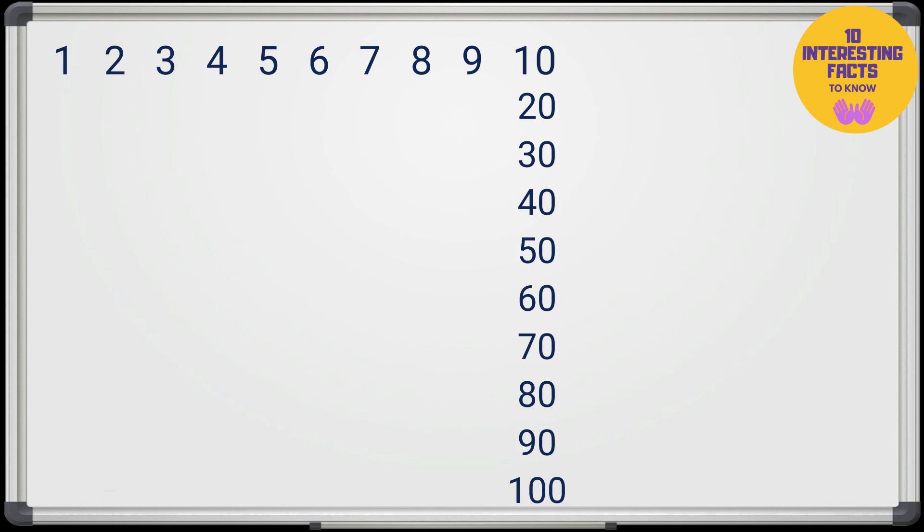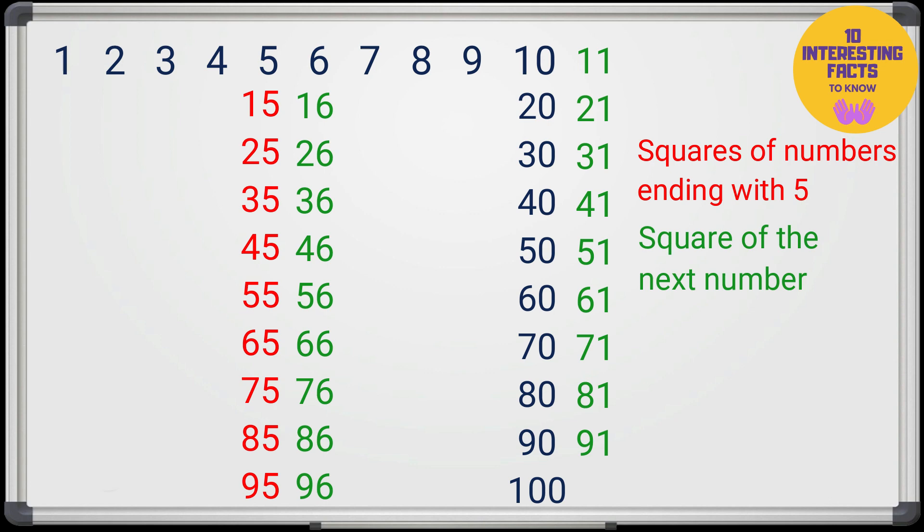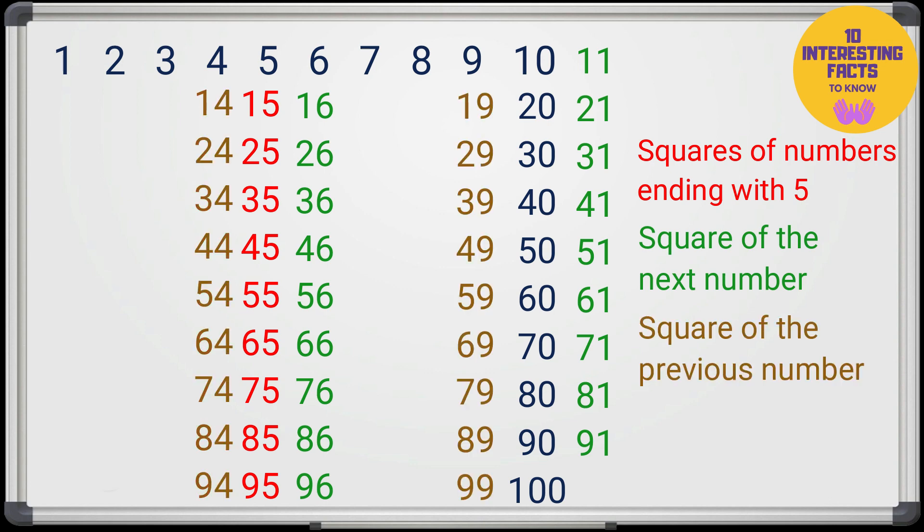You already need the squares of 1 to 10 and multiples of 10 like 20, 30 and so on. After learning 3 methods so far, you can now calculate the squares of over 60% of the 2 digit numbers in seconds.